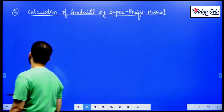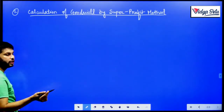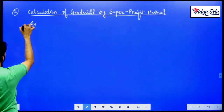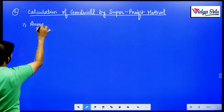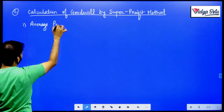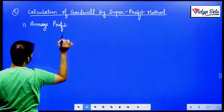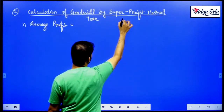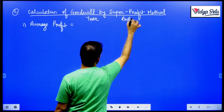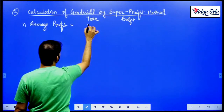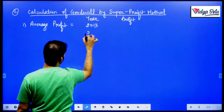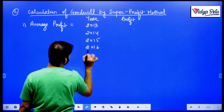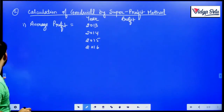Calculation of goodwill by super profit method. In super profit, we need average profit and normal profit. Let us first find out average profit. Average profit — we will have year and profit: 2013, 2014, 2015, and 2016. These 4 years of data were given.